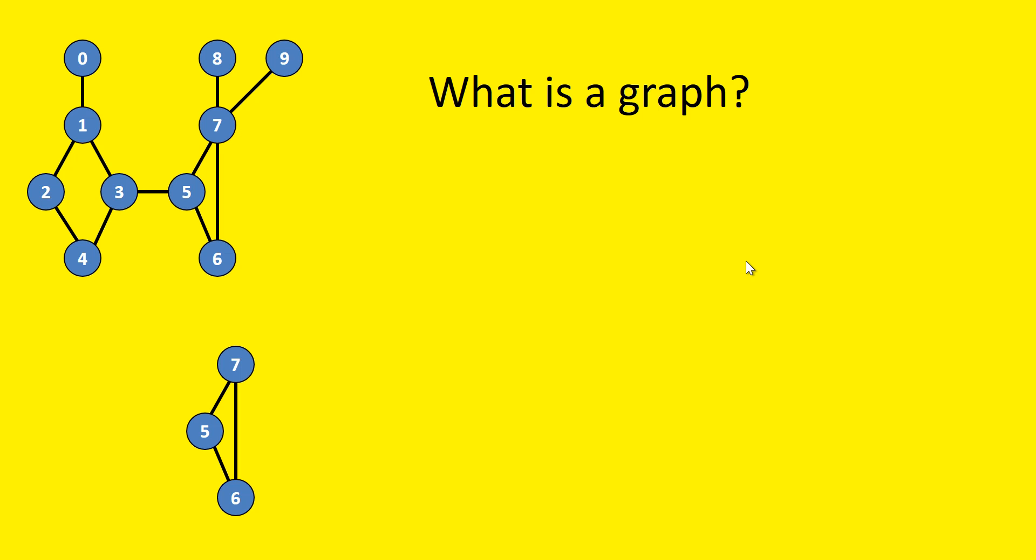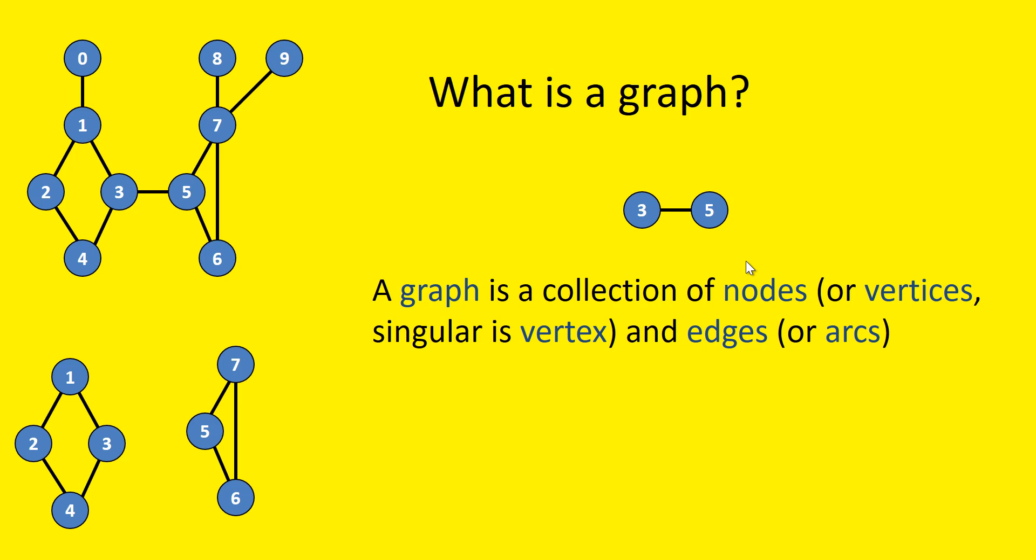So it could be multiple nodes. It could be three nodes, two nodes, four nodes. Even it could be a single node. Even if there is no node, you can call it a zero graph. A graph is a collection of nodes or vertices and edges or arcs. Each node is an element.